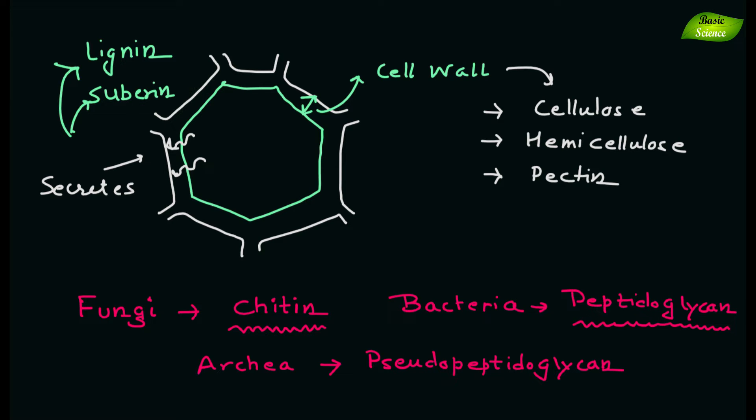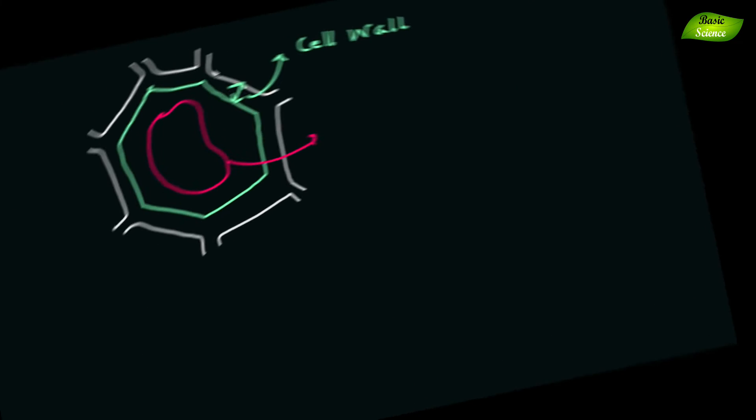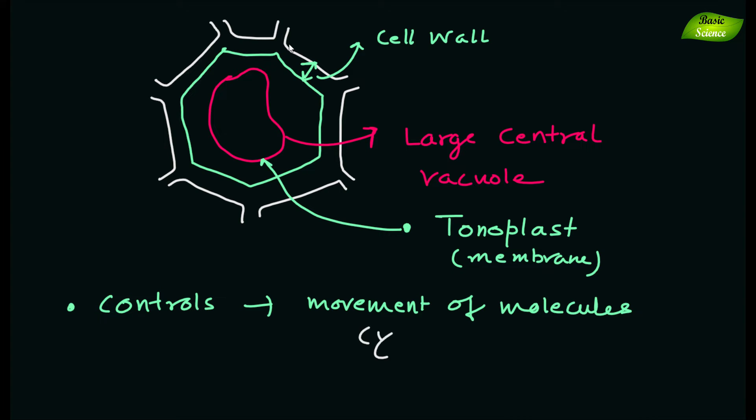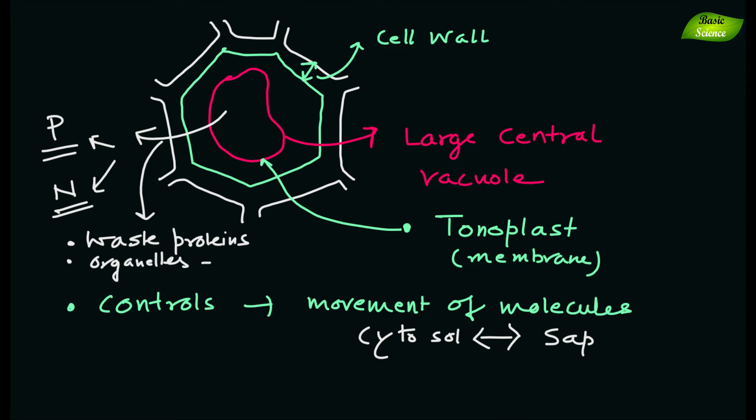Most plant cells have a large central vacuole, a liquid volume covered by a membrane known as tonoplast, which controls the movement of molecules between the cytosol and the sap. It stores vital substances like phosphorus and nitrogen and also helps in the digestion of waste proteins and organelles.